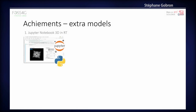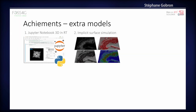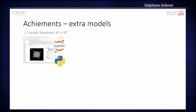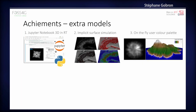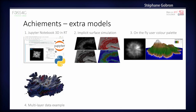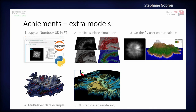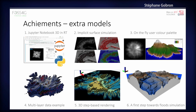Here are some samples of our achievements. We succeeded in integrating real 3D rendering into Jupyter Notebooks with Python, backed by WebGL. We also achieved simulation of real implicit surface volumetric systems, on-the-fly color palette systems for users, multi-layer data so you can add as many textures and datasets as you want on your maps, 3D step-based rendering, and simulation of floods on the map.